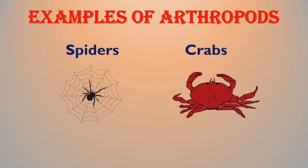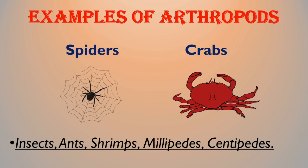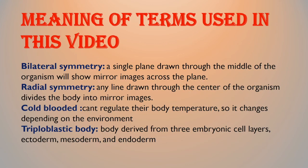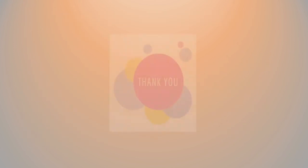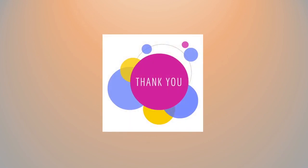Plenty of animals come under the group arthropods. Examples are spiders and crabs. Other examples are insects, ants, shrimps, millipedes, and centipedes. For better understanding, the terms used in this video are explained on screen. For more videos, please subscribe to this channel.